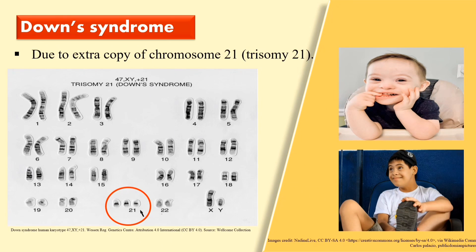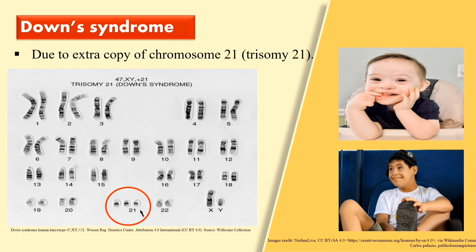So one extra 21st chromosome is present. Due to this extra chromosome, certain symptoms develop, such as mental retardation, upward slant to the eyes, small mouth, abnormal ear shape, etc. There is no cure for this syndrome.